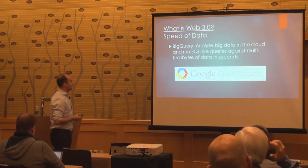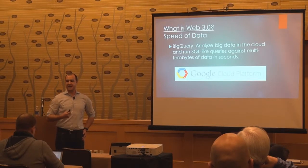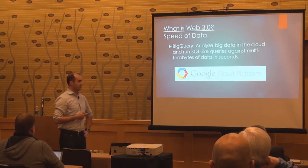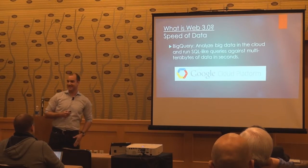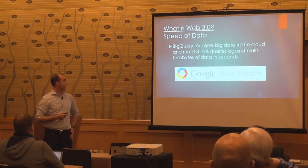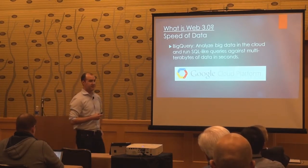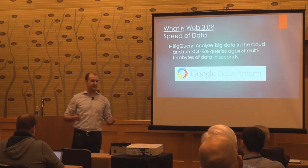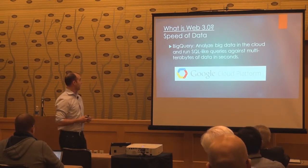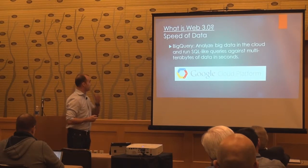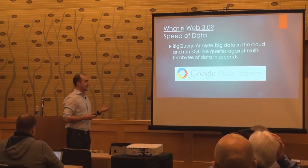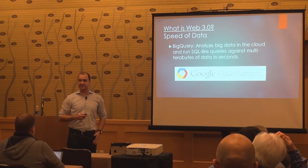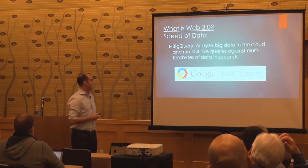Speed of data. There are all sorts of tools out there now that allow data processing to be very fast. BigQuery is a product Google released — it allows you to store a huge data set up to a billion rows, join that against another huge data set, and do it very quickly, within a couple of seconds. In the past you'd have to run a batch job at night, export that data into a reporting database — it would take a long time and it was hard to get to. So that's a lot faster now.